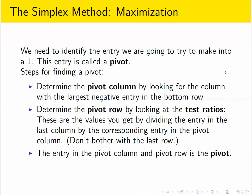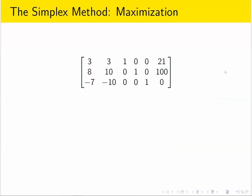So once you find the pivot column and the pivot row, where they line up, that's the pivot entry. Let's look at an example. So this is a simplex matrix we get from setting up a standard maximization problem.